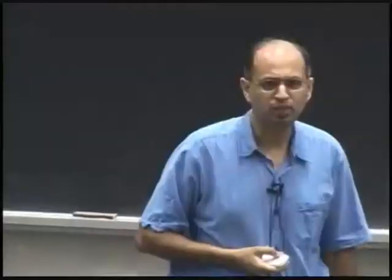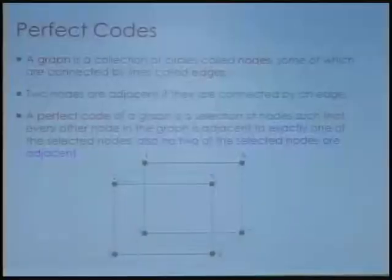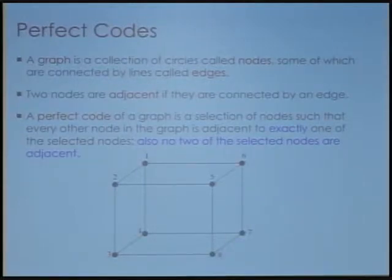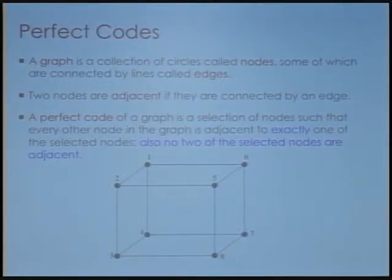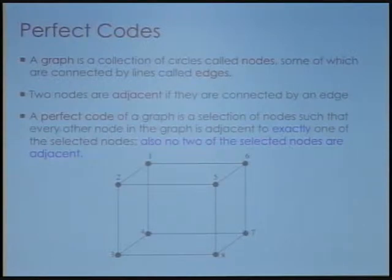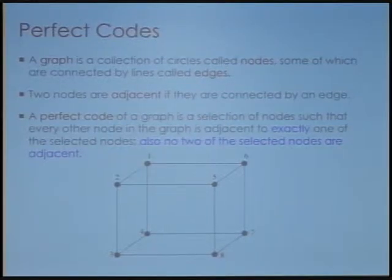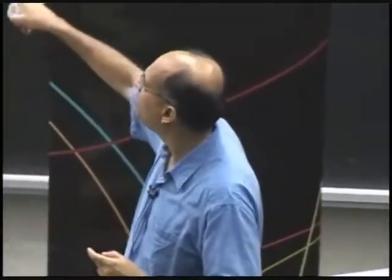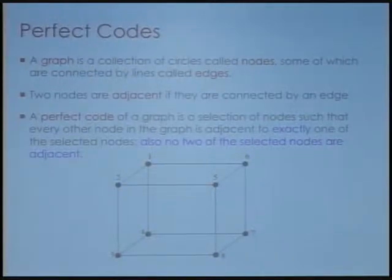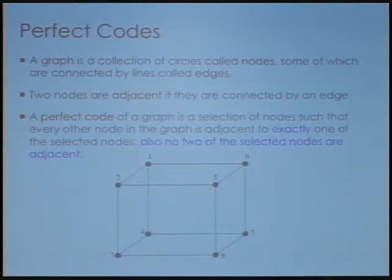Given such an abstract graph, a perfect code for the graph is a collection of nodes — a special collection — having two properties. The first is that every other node in the graph is adjacent to exactly one of these selected nodes — not 0, not 2, but exactly 1. The second property is that no two of the selected nodes can be adjacent to each other. Can somebody give an example of a perfect code for this graph, the cube graph? Nodes 2 and 7 form a perfect code because, first of all, they're not adjacent to each other. You can check that every other vertex in the graph is adjacent to exactly one of node 2 or node 7. Another example might be nodes 1 and 8; in general, any two opposite corners of this graph form a perfect code.